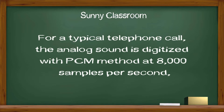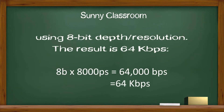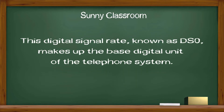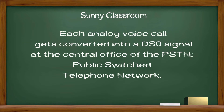For a typical telephone call, the analog sound is digitized with the PCM method at 8000 samples per second, using 8-bit depth or resolution. The result is 64 kbps. This digital signal rate, known as DS0, makes up the base digital unit of the telephone system. Each analog voice call gets converted into a DS0 signal.